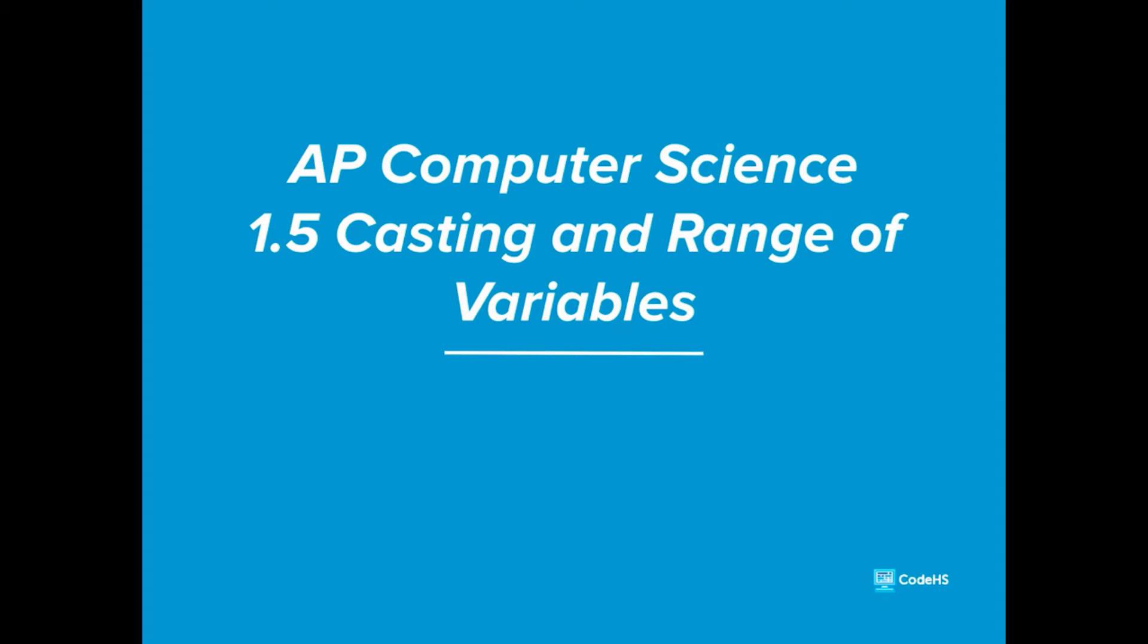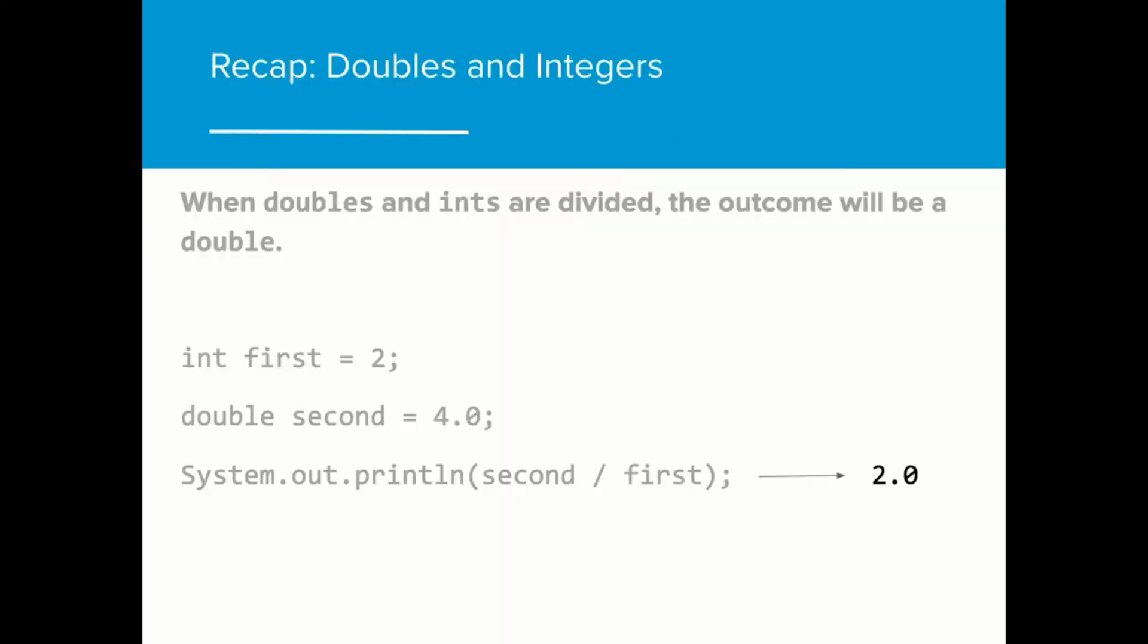Hi, in this lesson we're going to look at casting. We know that doubles and ints can be involved in arithmetic expressions. If a double and an int are involved in the same expression, the result is always going to be a double.